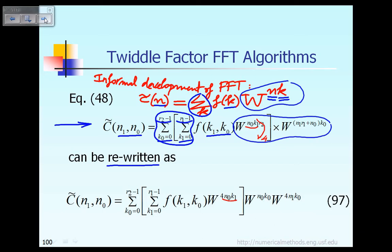Because, you remember, we assume in this chapter capital N is equal to r1 times r2 and we assume r2 is equal to 4, and we also assume r1 is equal to 4 in this chapter. So when you let r2 equal to 4, this is what you have. Then, if we look at the next term, you're supposed to have w raised to the power n0 times k0 as indicated in the black color there. That term is exactly right here as I showed you in equation 97.